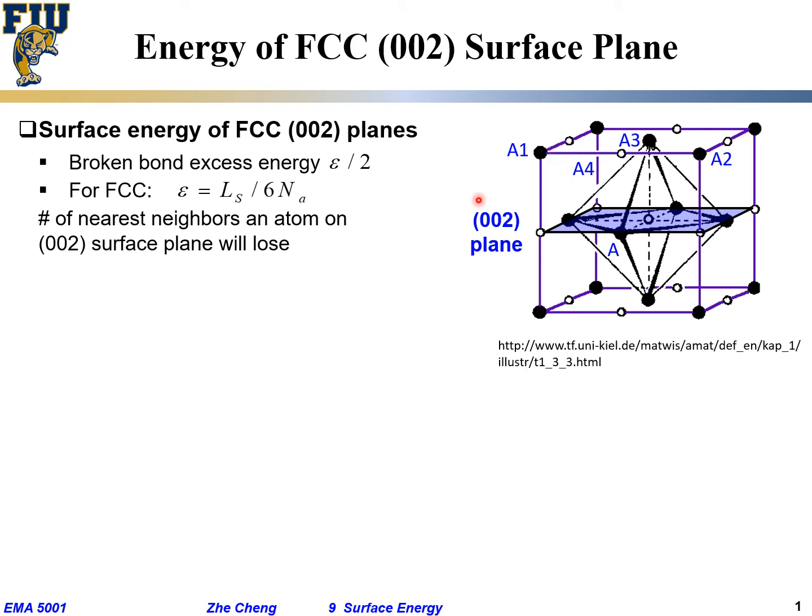If we do the counting, the number of nearest neighbor atoms that will be lost for this single atom within this (002) plane would be four. Four bonds will be broken for a specific atom within this (002) plane if I cut from here parallel to (002) plane.